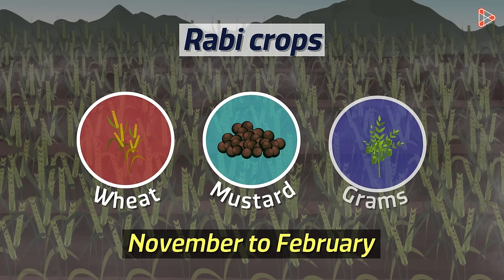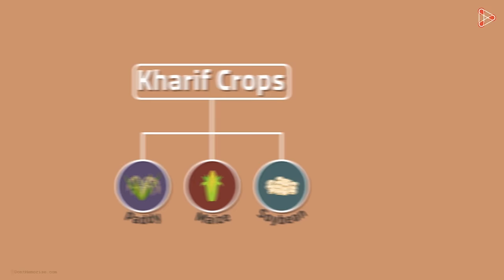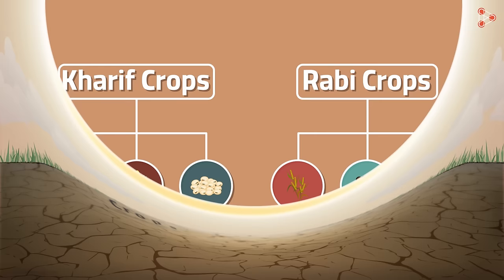Wheat, mustard and grams are a few of the winter crops. So can we say that paddy, maize and soybean are Karif crops? Yes! And similarly we can say that wheat, mustard and grams are Rabi crops.